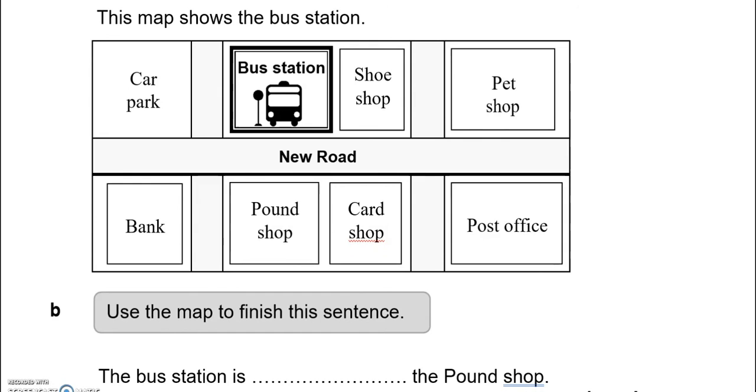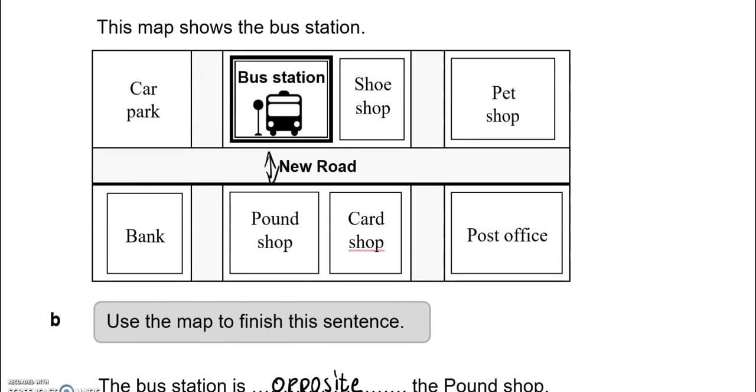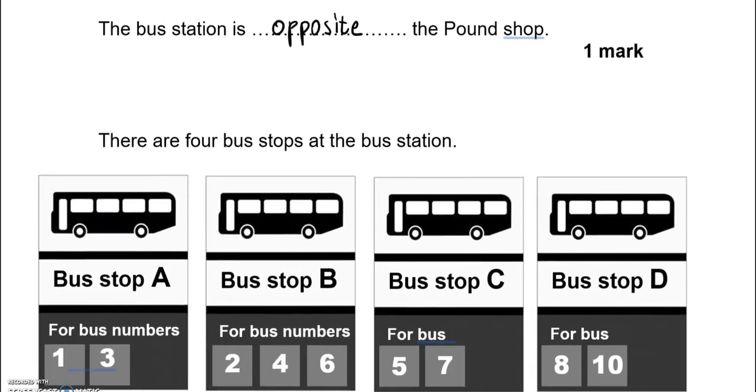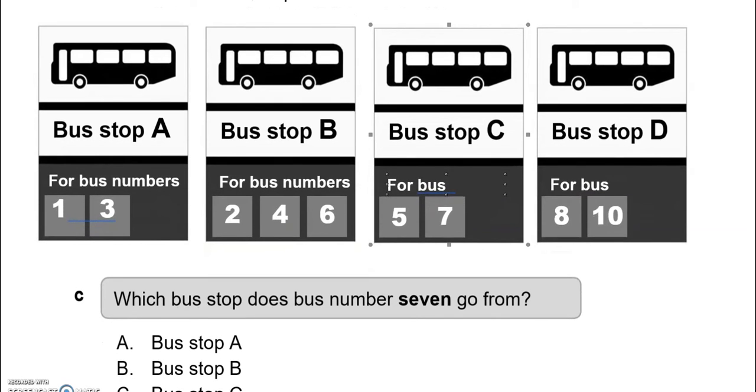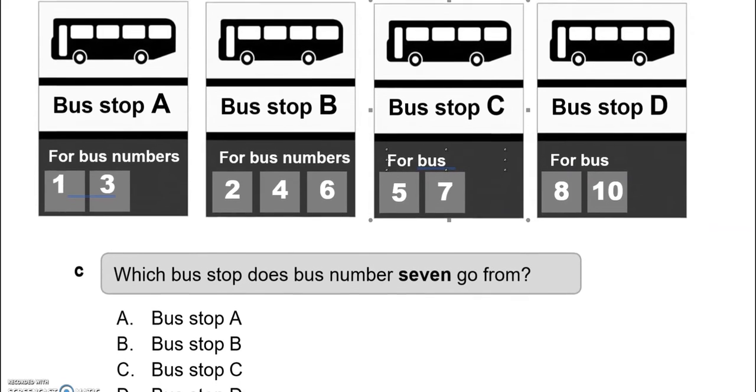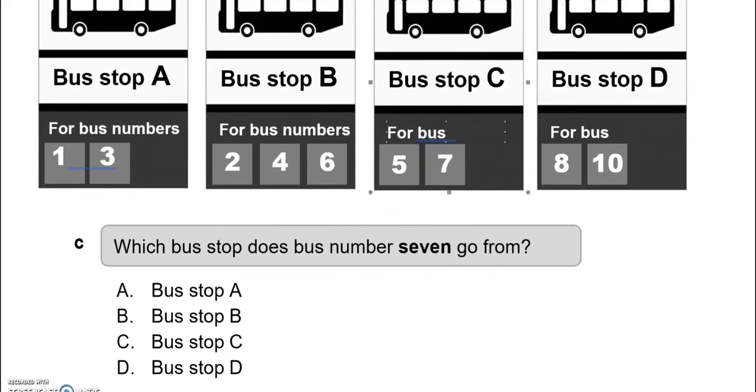This map shows the bus station. Use the map to finish this sentence. The bus station is opposite the pound shop. There are 4 bus stops at the bus station. Which bus stop does bus number 7 go from? That is bus stop C.